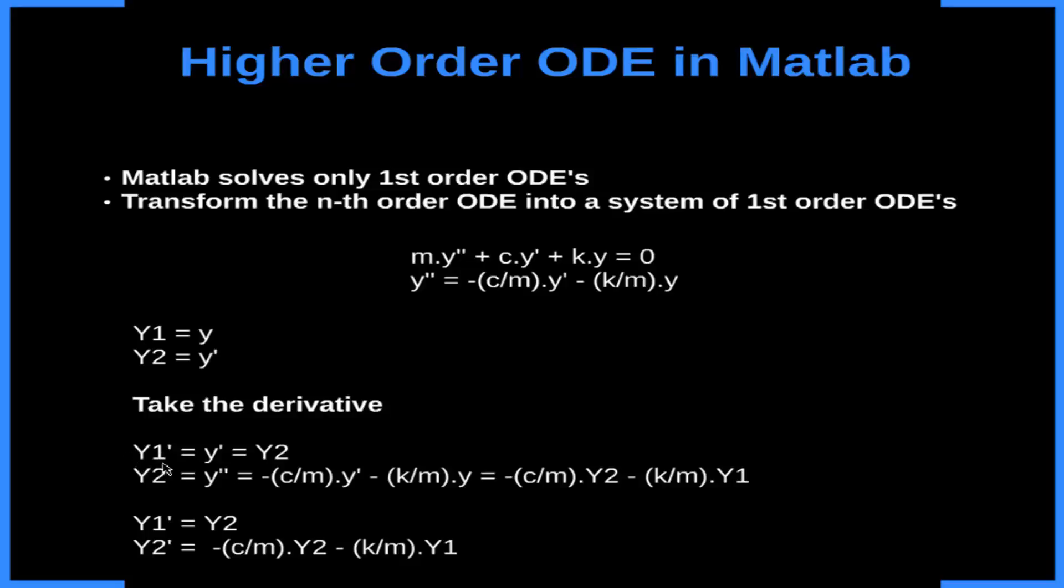Y1 prime is equal to y prime, which is equal to Y2, and the derivative of this is going to be equal to Y2 prime, which equals the second derivative of y.